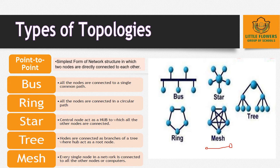In ring topology, all nodes are arranged in a circular path, and each node is connected to exactly two other nodes, forming a single continuous pathway for signals. When one node sends a message to another node that is not adjacent to it, data travels through all intermediate nodes until it reaches its final destination.